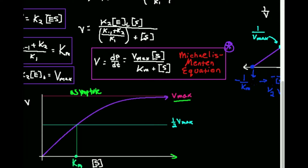So the question is, if you want to find out what the Vmax is from this plot, can you? And the answer is no. You can't figure out what substrate concentration yields the Vmax, because what would you have? When do you get closest to this Vmax horizontal asymptote? It's technically when the substrate concentration is infinity. So if you're doing the limit as the substrate concentration goes to infinity of the rate, then that's the Vmax.